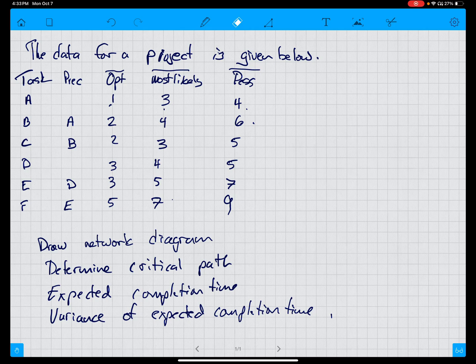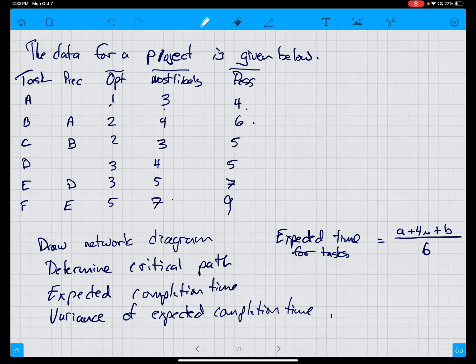In order to draw the network diagram, we have to have the expected completion time for specific tasks. And that's equal to A, which is the optimistic, plus 4M, which is the most likely, plus B, which is the pessimistic, over 6. So this is a weighted average that weights the most likely a little bit, so it gives you a central tendency.